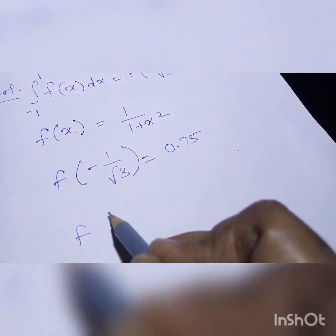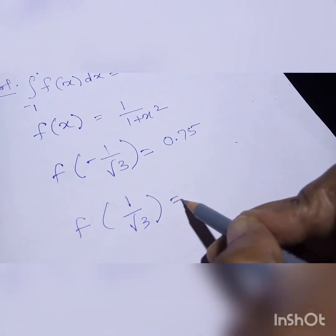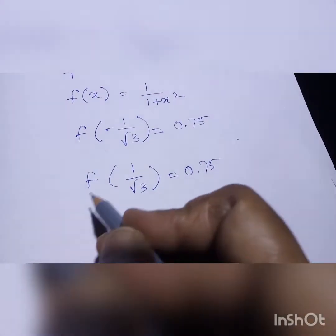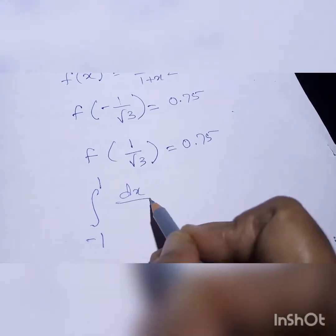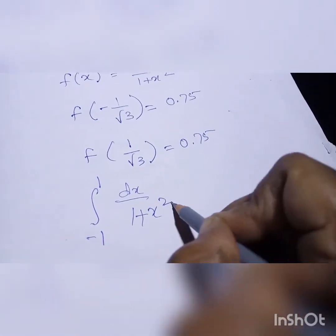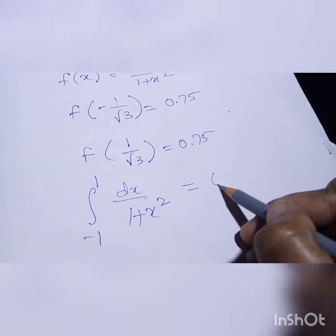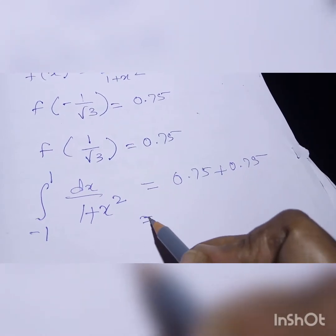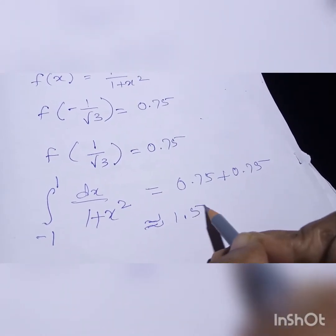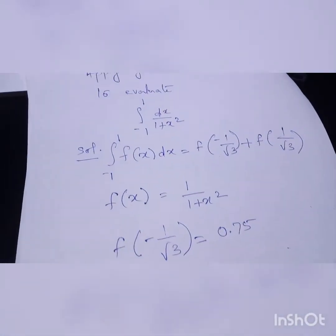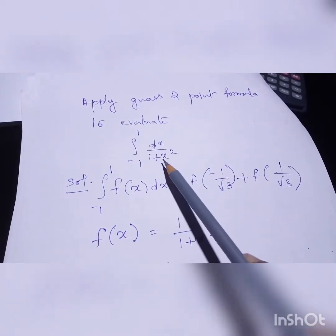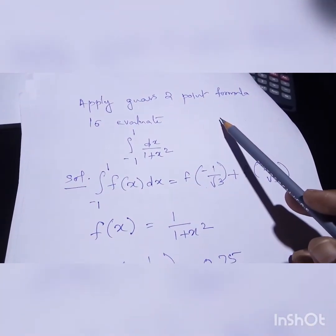Next, find f(1/√3) — again you get 0.75. So substituting in the formula, the integration of minus 1 to 1 of dx/(1 + x²) equals 0.75 plus 0.75, and you will get the approximate value of 1.5. This is how you find the integration of dx/(1 + x²) from minus 1 to 1 using the two-point formula.